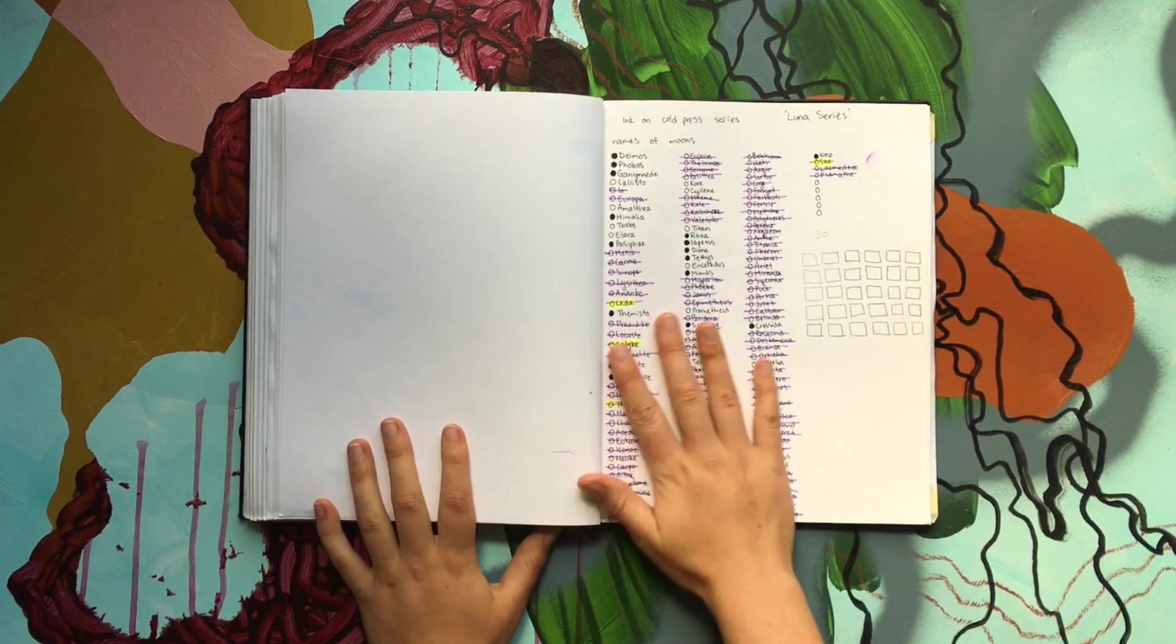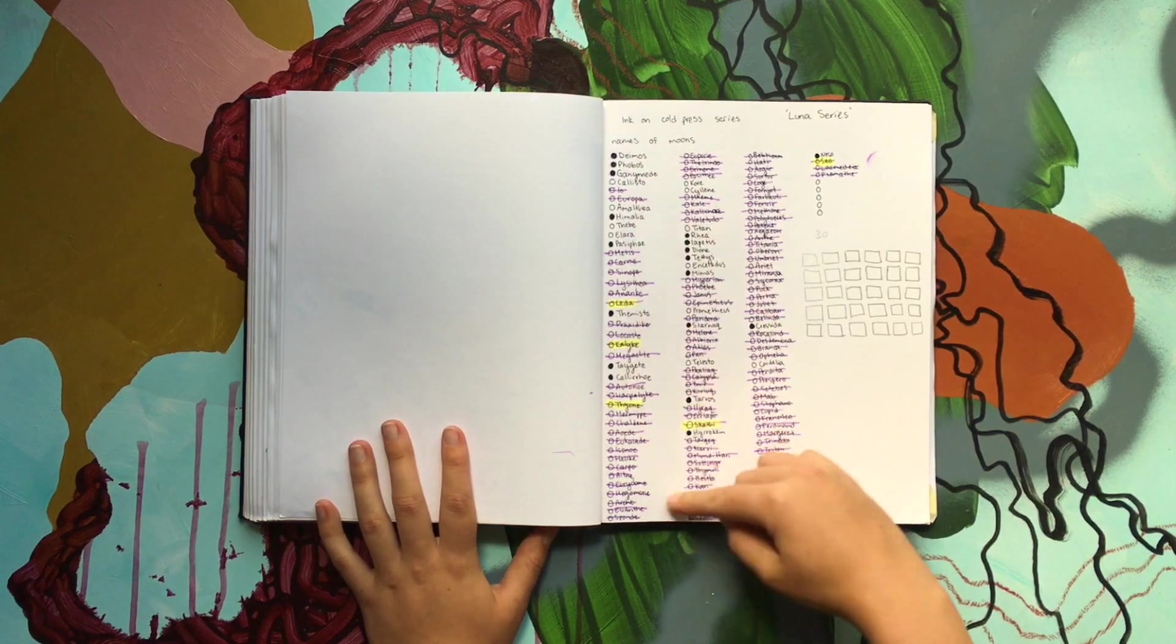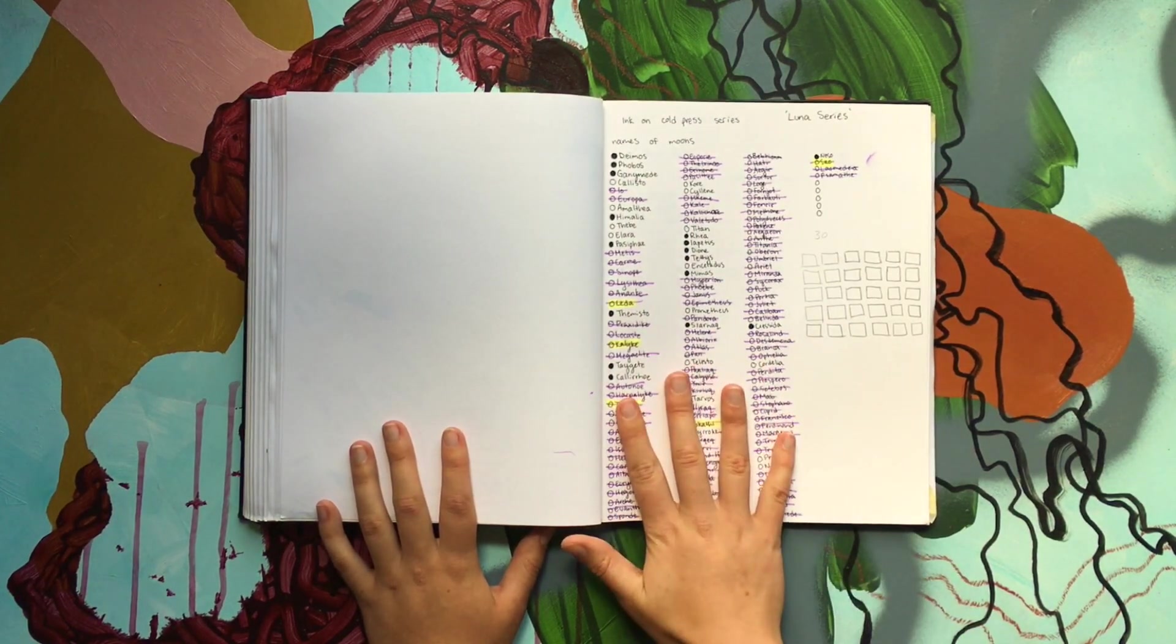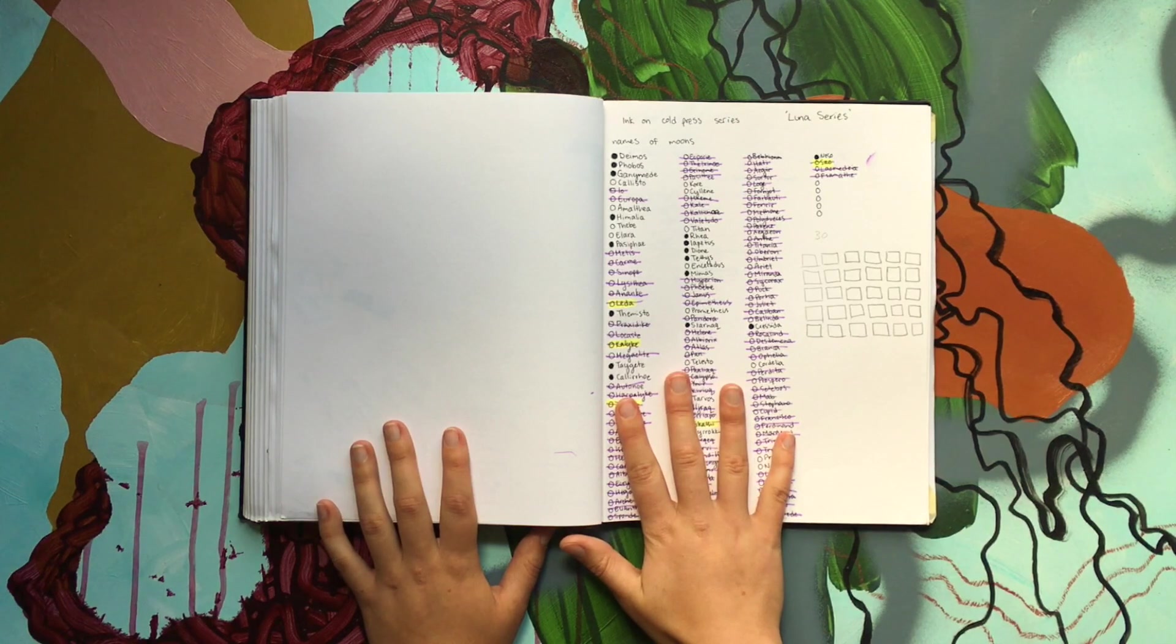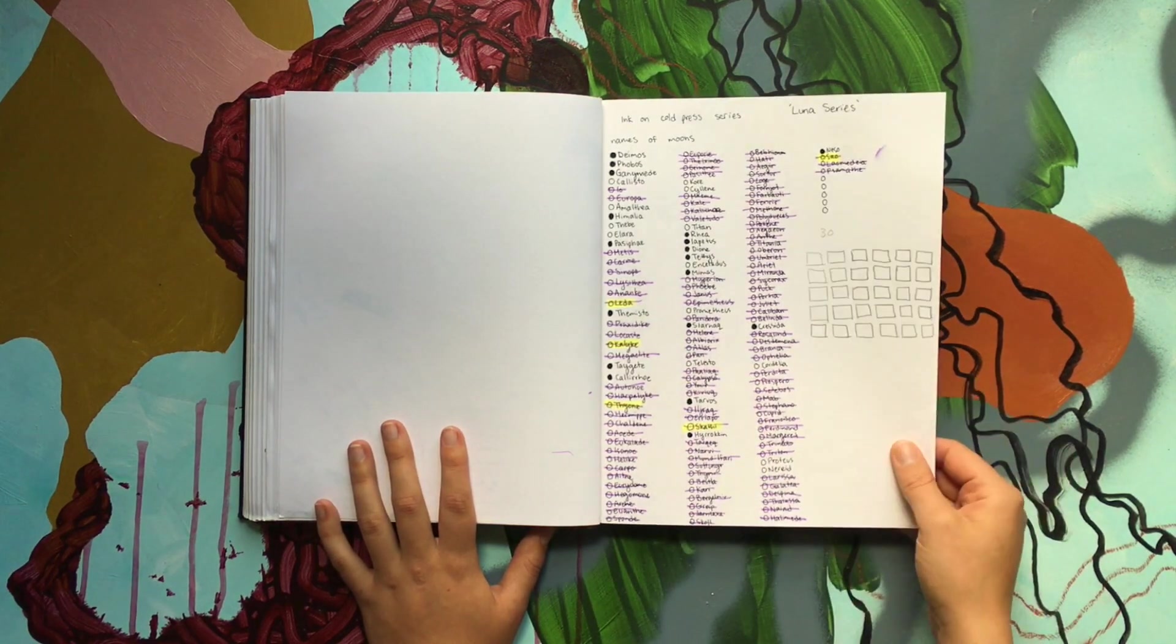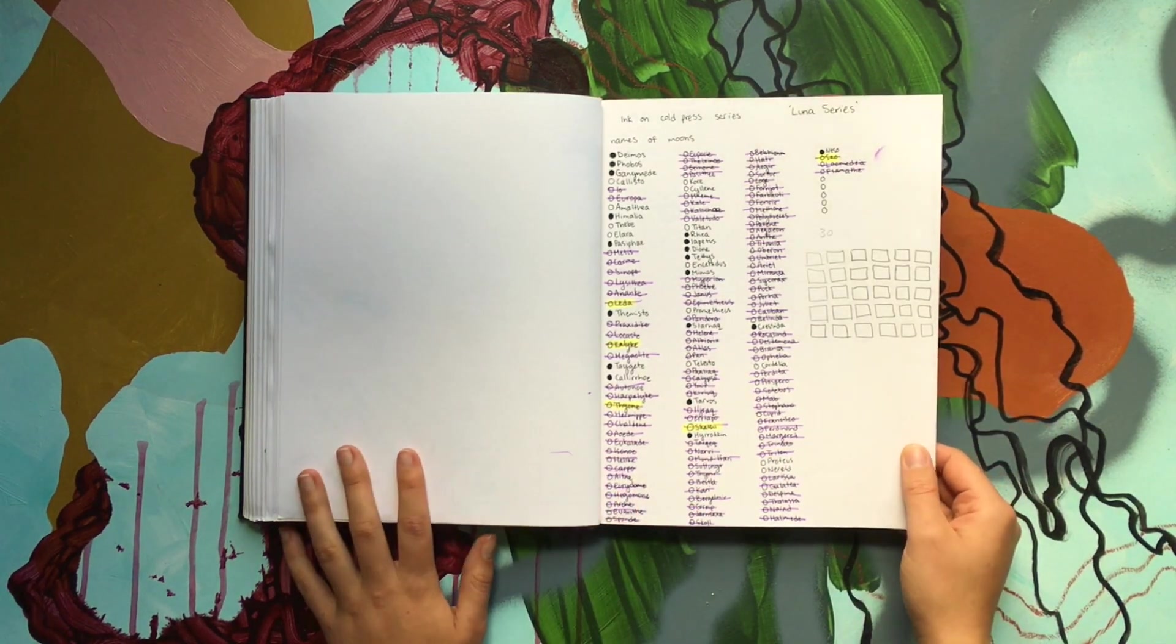And then my Luna series, trying to figure out what to call them all. I listed a bunch of moons of other planets in our solar system. I was trying to go through and pick out some names.